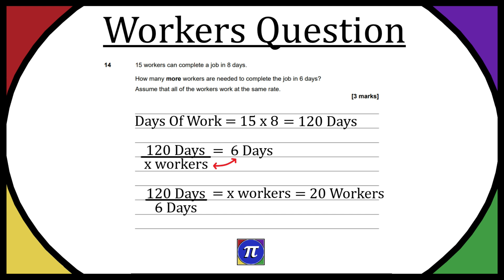They said, how many more workers do we need? Well, originally we had 15. So the difference would be 20 minus 15. We need 5 more workers.